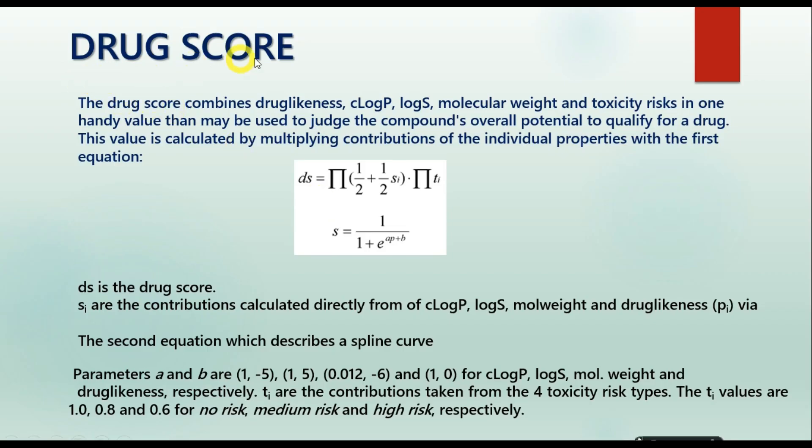We will compute similar compound assessments using certain online servers later in this video. And next is about the drug score. The drug score is the combination of the drug likeness, log P values, log S value, molecular weight, and toxicity risk put together to get a single value called the drug score. This drug score can be used to judge the compound's overall potential to qualify for a drug.